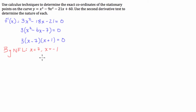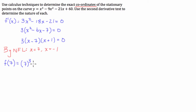I've seen some students in tests get to here and think that's all they need to do. However, the question asks for the exact coordinates of the stationary points, so we need both x and y values. We're going to substitute into the original function. First, f(7) equals 7 cubed minus 9 times 7 squared minus 21 times 7 plus 60.